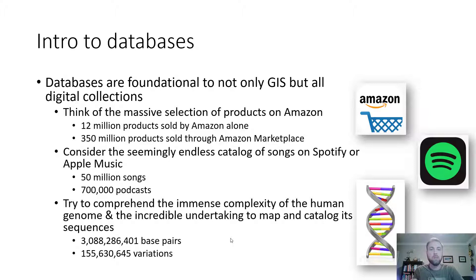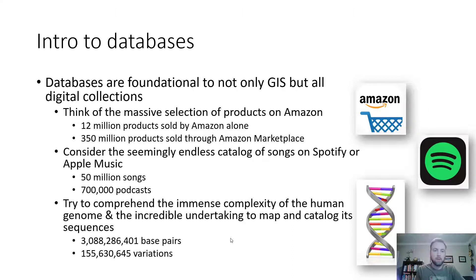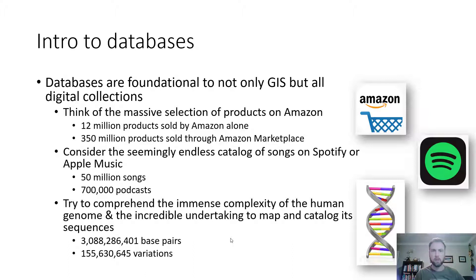Try to comprehend the immense complexity of the human genome and the incredible undertaking to map and catalog its sequences. The Human Genome Project contains 3,088,286,401 base pairs of genes, among which there are 155,630,645 variations. Just massive numbers. The Human Genome Project also needed to rely on databases to maintain all of this. If you're into genetics, there's a treasure trove of information on the Human Genome Project website. The bottom line is that databases are not limited to geographic data — they're useful for many different things, with great capability for organization, querying, and accessing data.